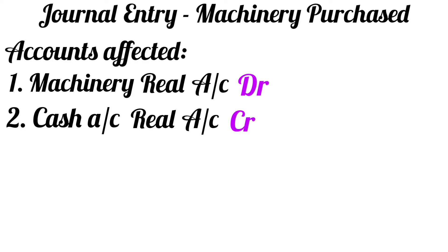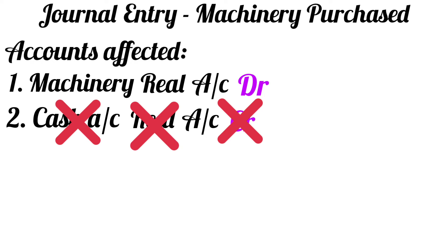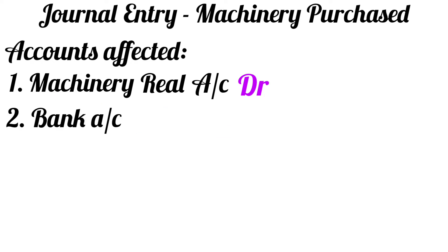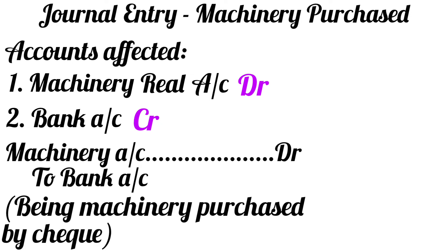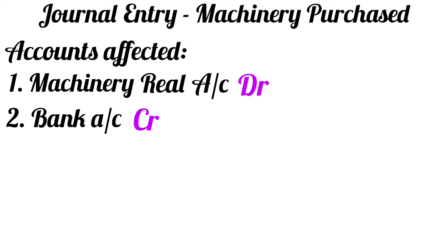Let us say the machinery is purchased by making the payment through check. In such a situation, the cash account will not be affected. Instead, the bank account will be affected. Bank account will be credited because the payment will go through bank. When some payment is made through bank account, bank account is credited, and when you receive some amount in your bank account, bank account is debited. Hence, the journal entry would be: machinery account debit to bank account, and the narration would be: being machinery purchased by check.